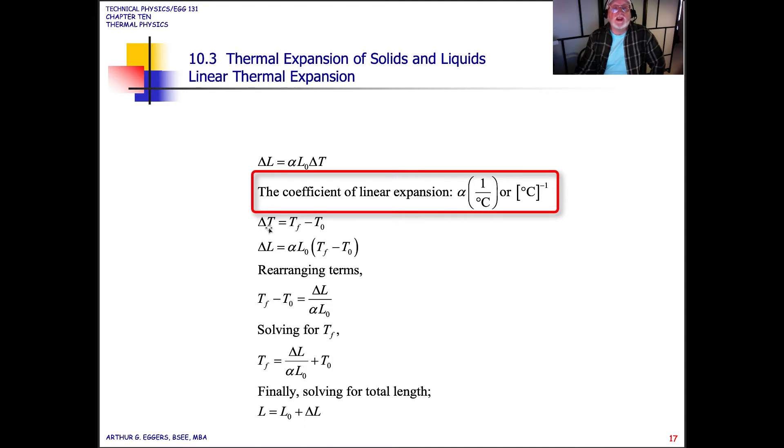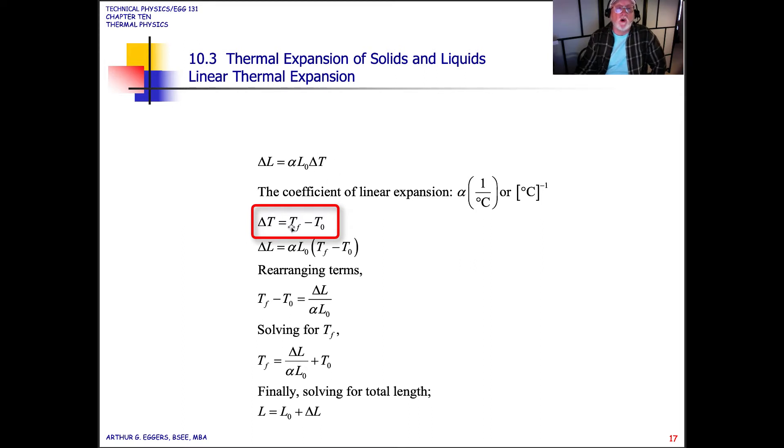The change in temperature then, the last term in that expression, is what we've seen before: temperature final minus temperature initial. So we can substitute that into the delta T relationship. Then, rearranging terms, we have temperature final minus temperature initial equal to the ratio of the change in length divided by the coefficient of expansion for that material times the original length.